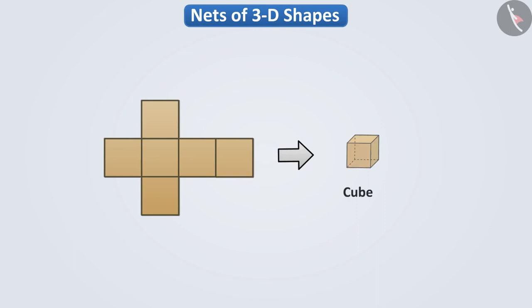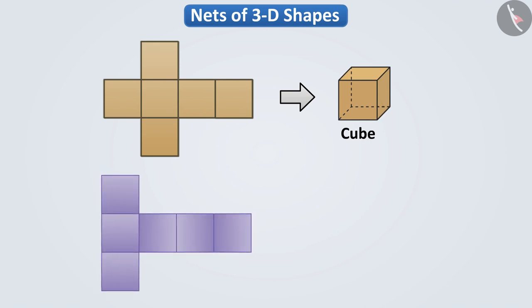We saw that a cube can be made from this net. Now, look at this net. All squares are made in it too. If we fold the squares properly, then we will definitely get a cube.